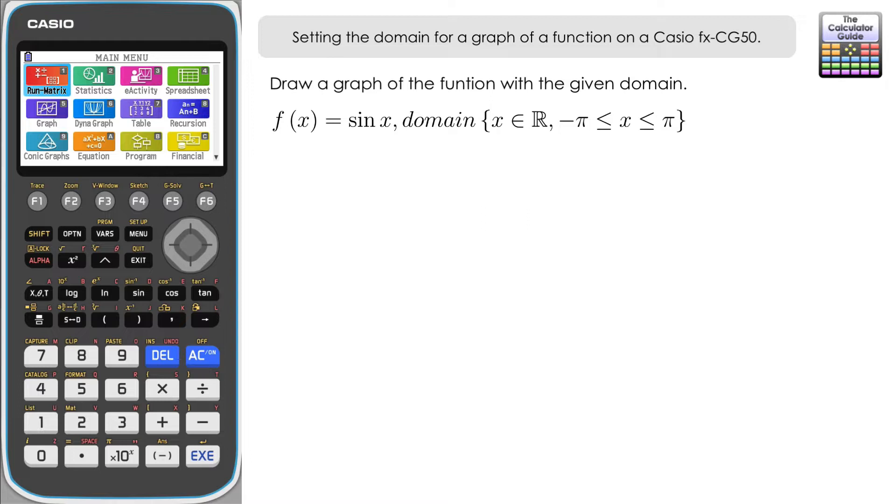Let's take a look at the first example here. We've got f(x) equaling sine x where x can be any real number in the set of real numbers between minus π and π. So we've got our distinct domain there and we've got our function sine x. Let's see how we can do this on the fx-CG50.